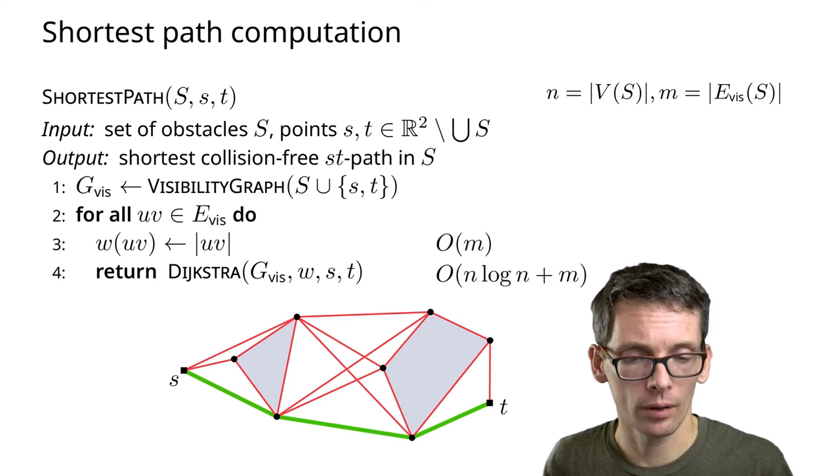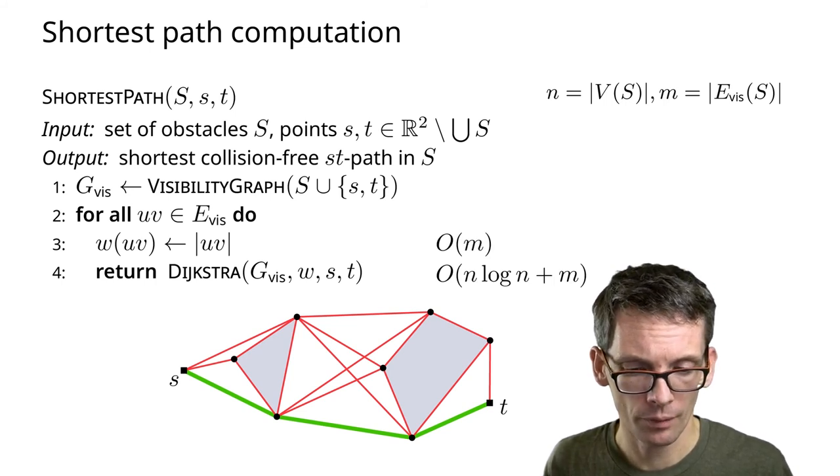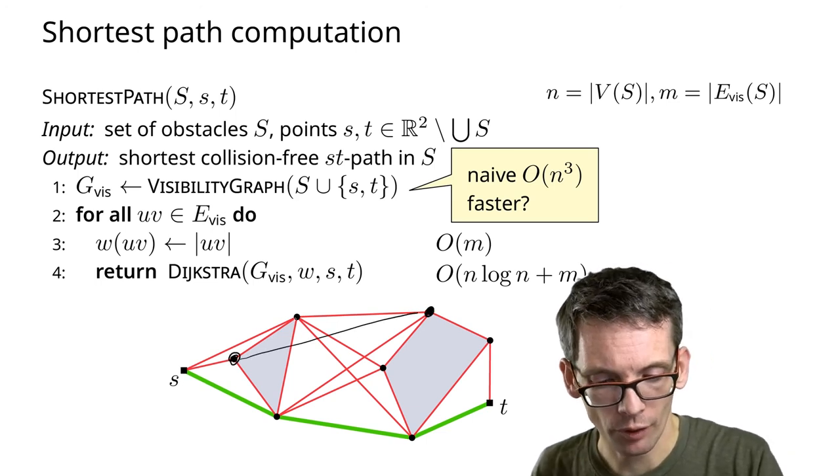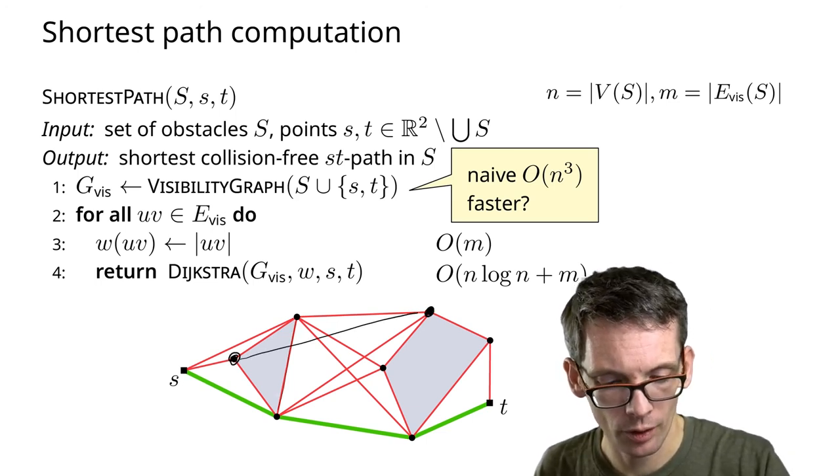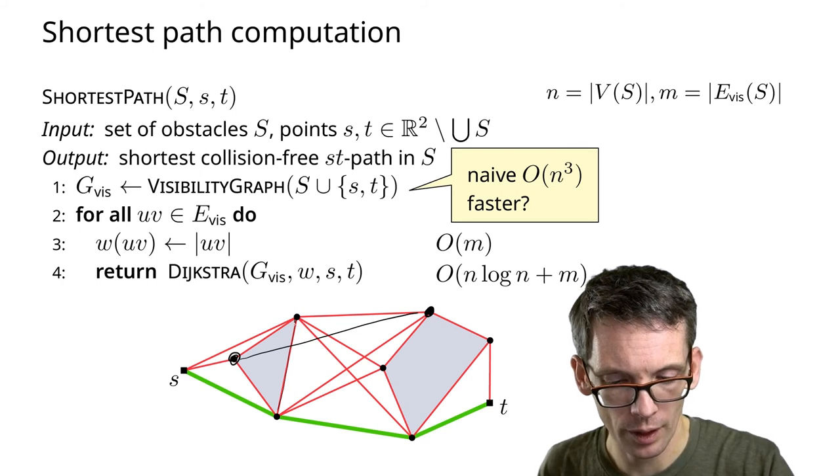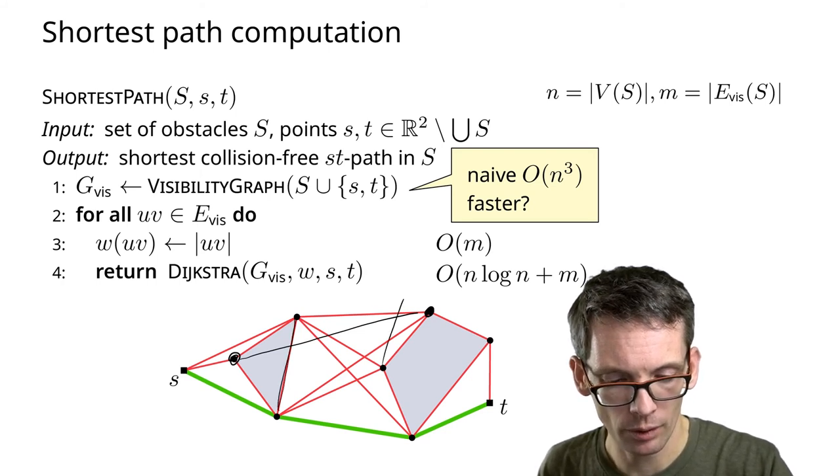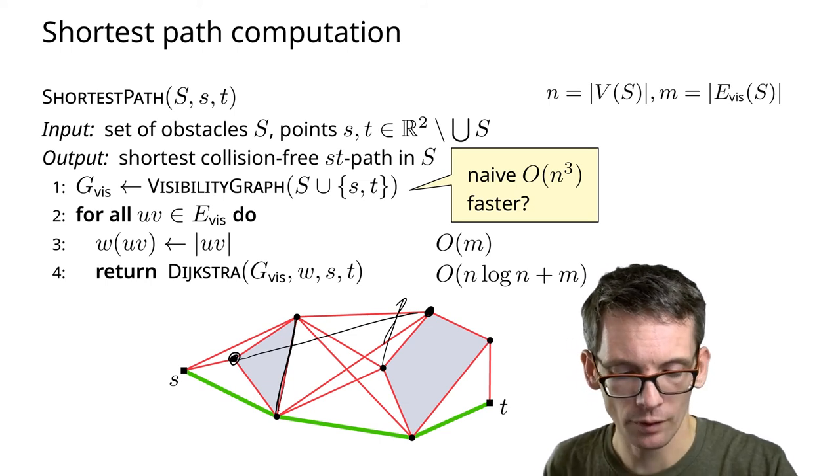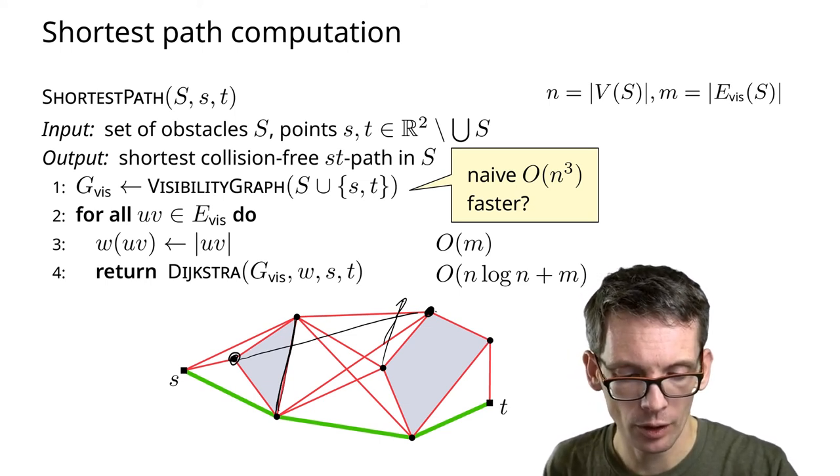Now the difficult part is computing the visibility graph. I would check for every edge where that intersects, and if I find one, there's no edge here. If I find one as here, then it's not in the visibility graph.